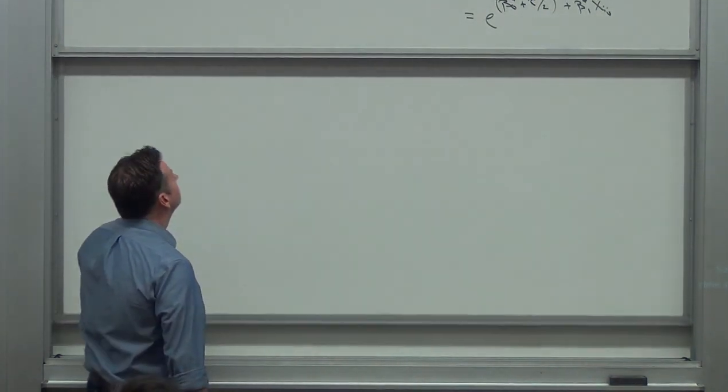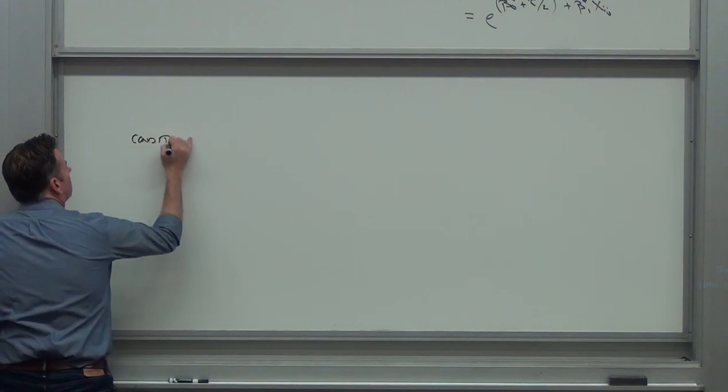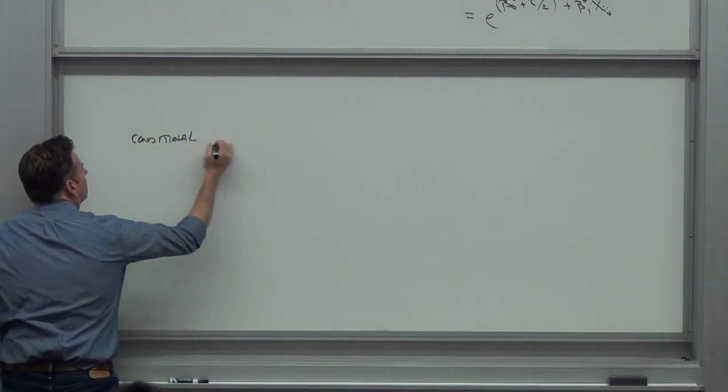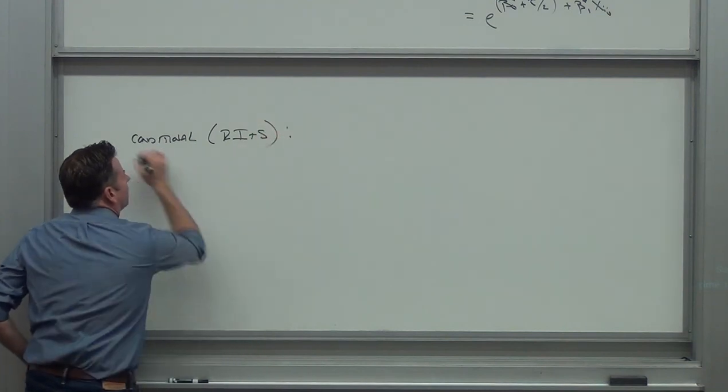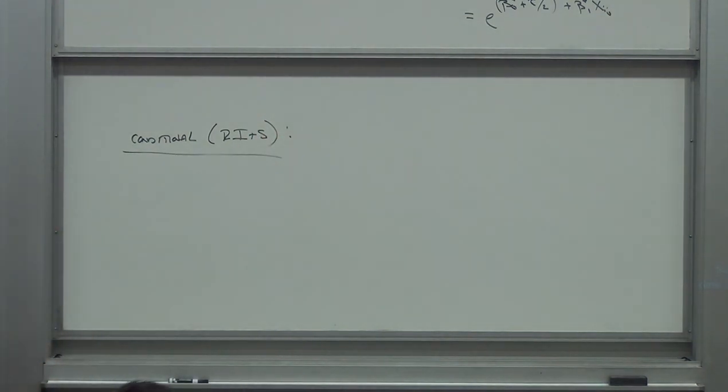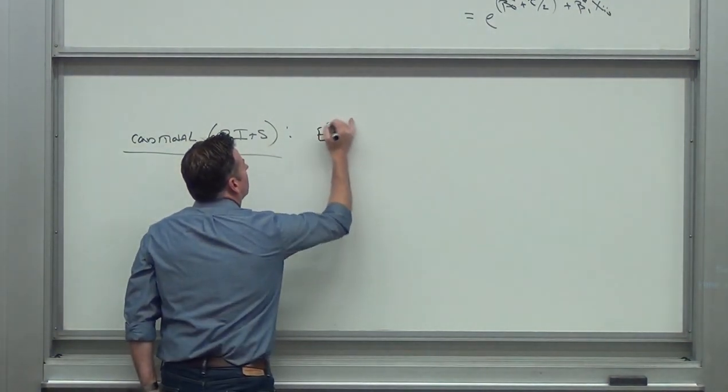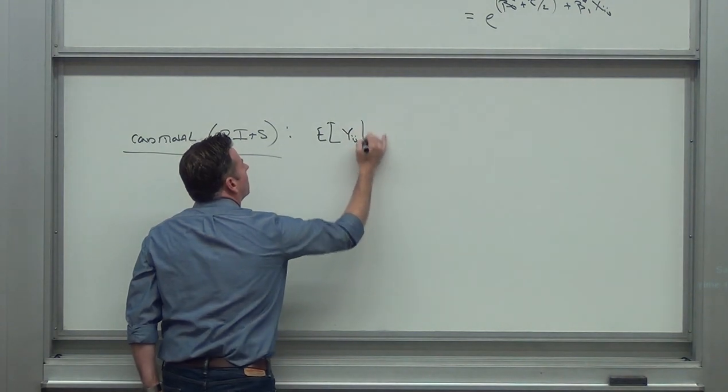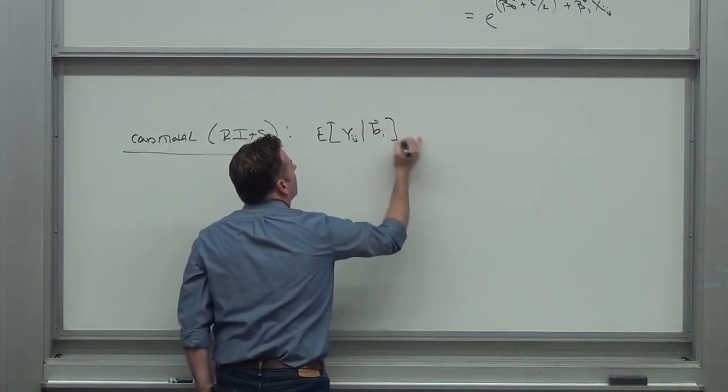So now think about the random intercept plus slope model. That was the next part that I gave you guys. It's supposed to be taken at this model.